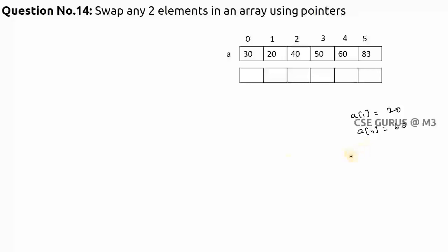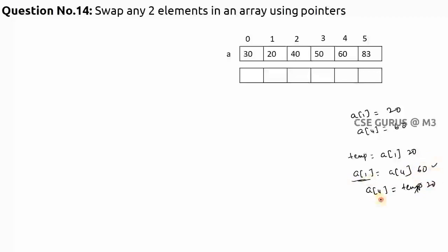In general, to swap, we take a temporary variable: temp = a[1], then a[1] = a[4], then a[4] = temp. So temp gets 20, a[1] gets 60, and a[4] gets 20. Previously it was 20 and 16, now it becomes 60 and 20. This is the standard swap procedure.